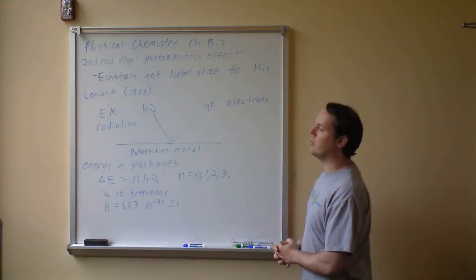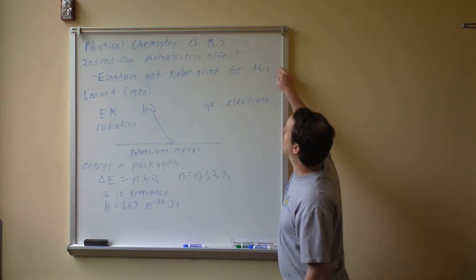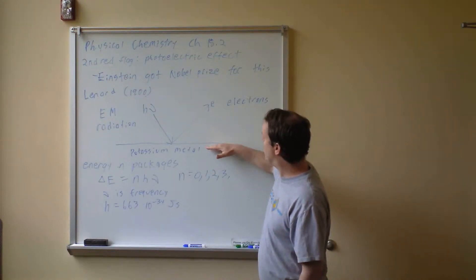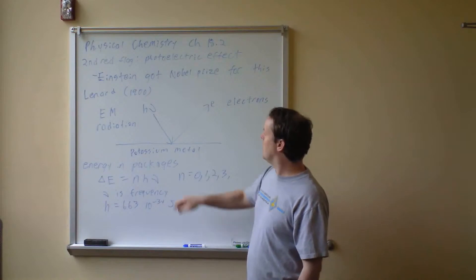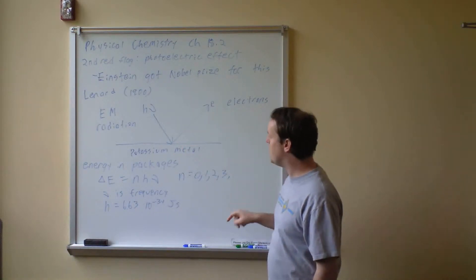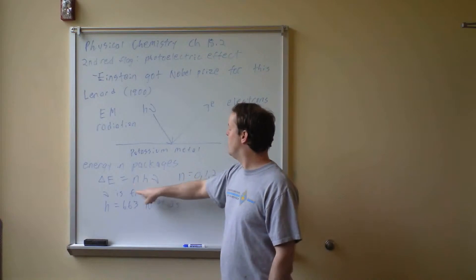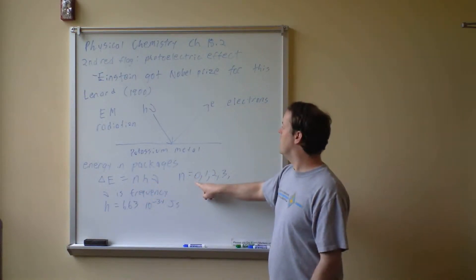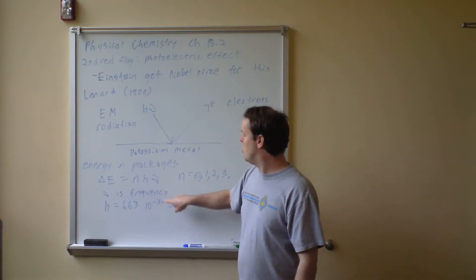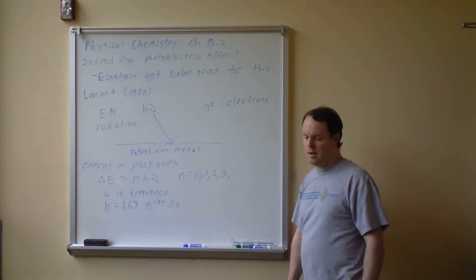Continuing on Physical Chemistry, Chapter 18, Section 2. We already said the second red flag that classical mechanics wasn't quite right was the photoelectric effect. Albert Einstein won the Nobel Prize for this — not for relativity. In 1900, Lenard was doing an experiment where he had potassium metal and was hitting it with electromagnetic radiation of energy hν. The radiation hits it, and out come electrons. What he found was that the energy comes in packages of value n times hν, where n is any integer. Here h is 6.63 × 10⁻³⁴ joule-seconds in MKS units.